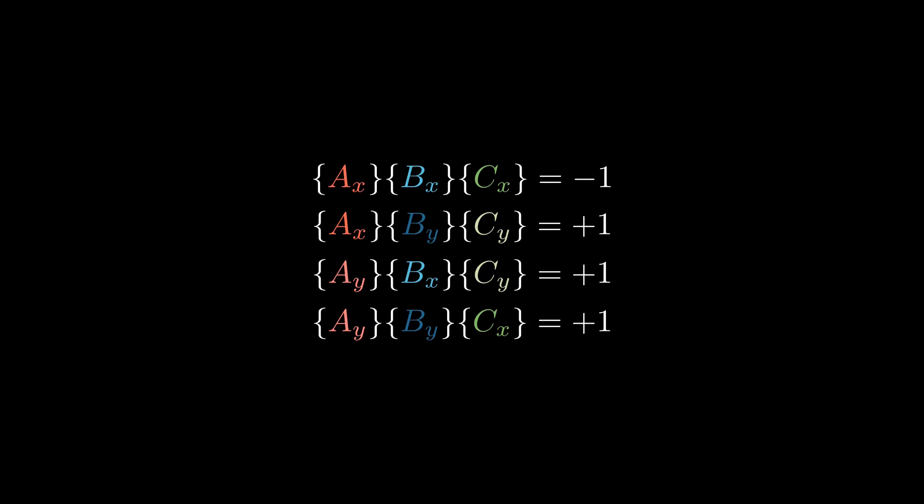Each of these variables can only take on the values of plus one and minus one, and we know that the first equation has to multiply out to negative one, so let's just assume that AX, BX, and CX are all negative one and see what happens.